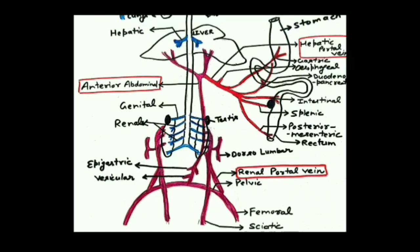The purpose of the renal portal system is to carry impure blood from the posterior body parts to the kidney. The blood contains excessive salt and waste products. The kidneys have nephrons that remove the excess salt and waste from the blood, so less impure blood is supplied to the heart. The hepatic portal system consists of the hepatic portal vein and anterior abdominal vein, and the renal portal system carries blood from the sciatic and femoral veins to the kidneys.